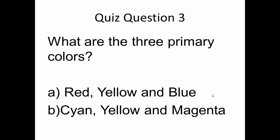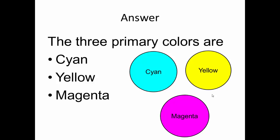So what are the three primary colors? Red, yellow and blue, or cyan, yellow and magenta? Of course, the three primary colors are cyan, yellow and magenta.